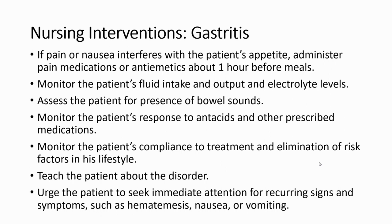If pain or nausea interferes with the patient's appetite, administer pain medication such as omeprazole and anti-emetics one hour before meals. Monitor the patient's fluid intake and output and electrolyte levels. Assess the patient for bowel sounds. Monitor the patient's response to antacids and other prescribed medications, and monitor compliance with treatment. Teach the patient about the disorder and urge them to seek immediate attention for recurring signs and symptoms such as hematemesis, nausea, and vomiting.